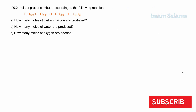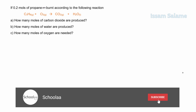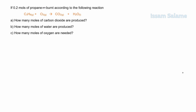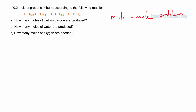Let's start with our first exercise. If 0.2 moles of propane are burned according to the following reaction, how many moles of carbon dioxide and water are produced, and how many moles of oxygen are needed? Since the given quantities and the required quantities are both in moles, this is called a mole-to-mole problem. Always balance the chemical reaction first. We multiply carbon dioxide by 3, then water by 4, and oxygen by 5.